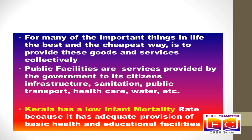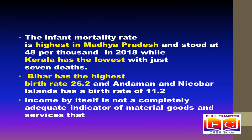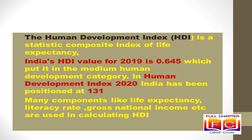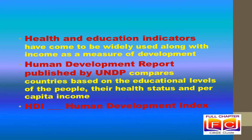Over the past few decades, health and education indicators are widely used along with income as a measure of development. For instance, the Human Development Report published by UNDP compares countries based on the educational levels of the people, their health status, and per capita income. HDI stands for Human Development Index. Many components like life expectancy, literacy rate, gross national income, etc. are used in calculating HDI. A country scores a higher HDI when the lifespan is higher, the education level is higher, and the gross national income, or GNI per capita, is higher. India's HDI value for 2019 is 0.645, which puts India in the medium human development category.